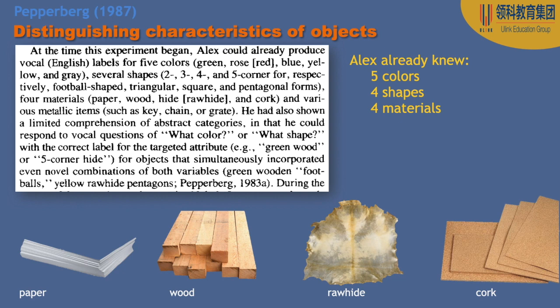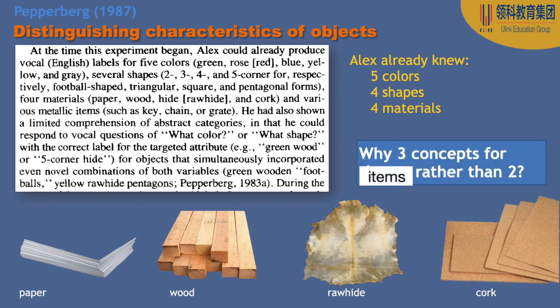Keep in mind that Alex was used in a lot of experiments and had been working with Pepperberg since 1977. He already comes into this study with some knowledge and will accrue more vocabulary as it moves forward. This is a longitudinal study, meaning it takes place over years. We need to know what his baseline is: coming into the experiment, he already knew five colors, four shapes, and four materials — paper, wood, rawhide, and cork.